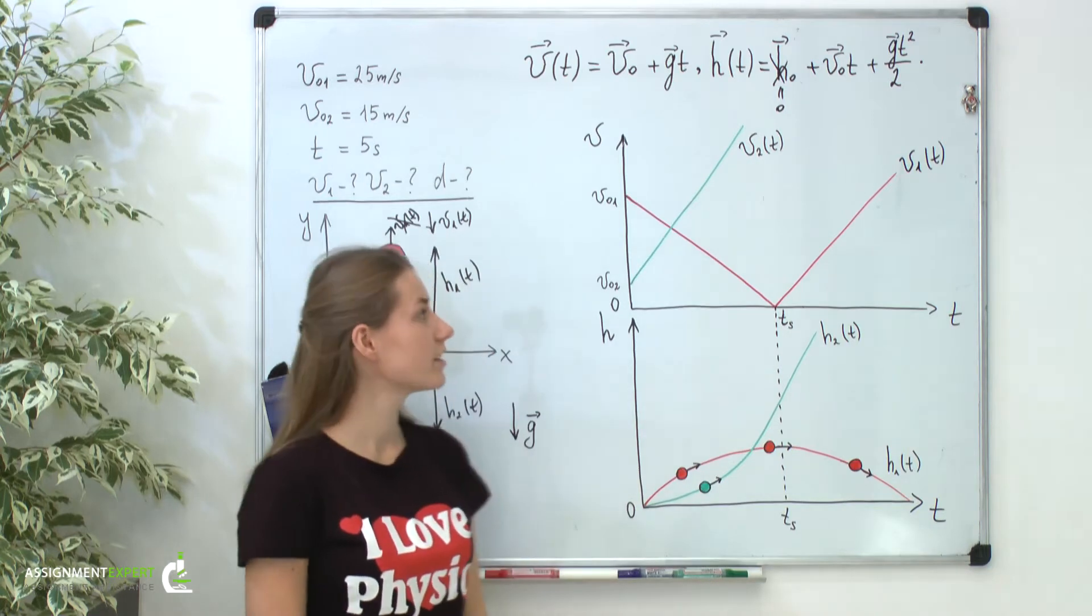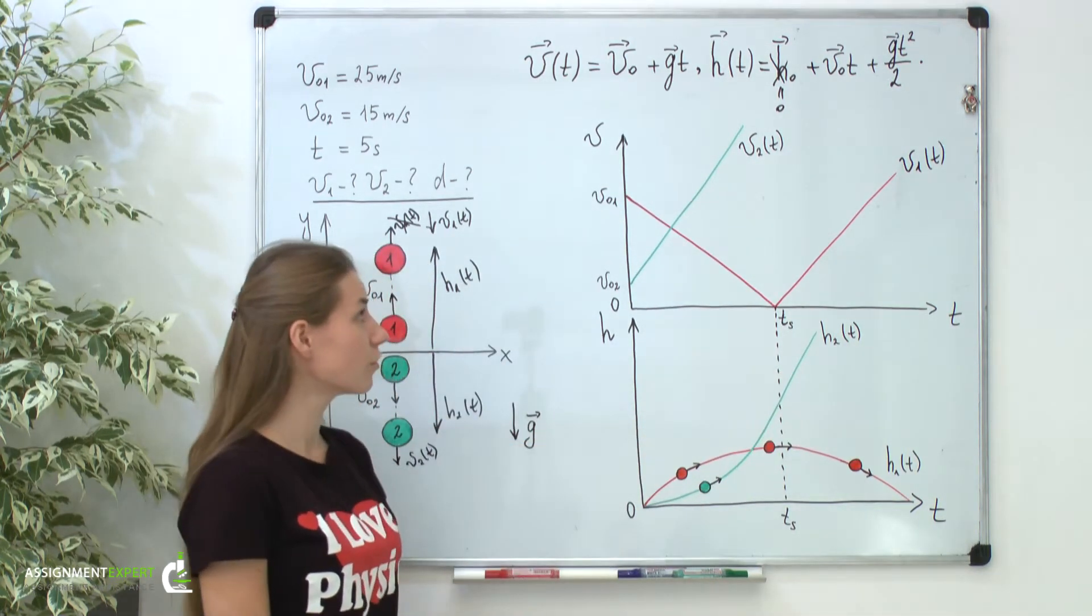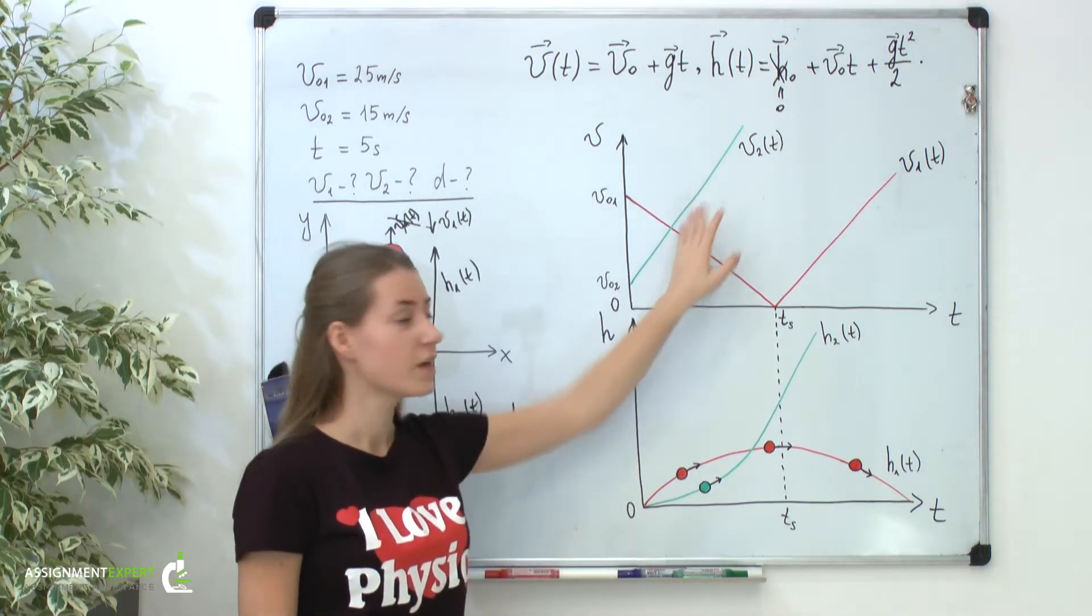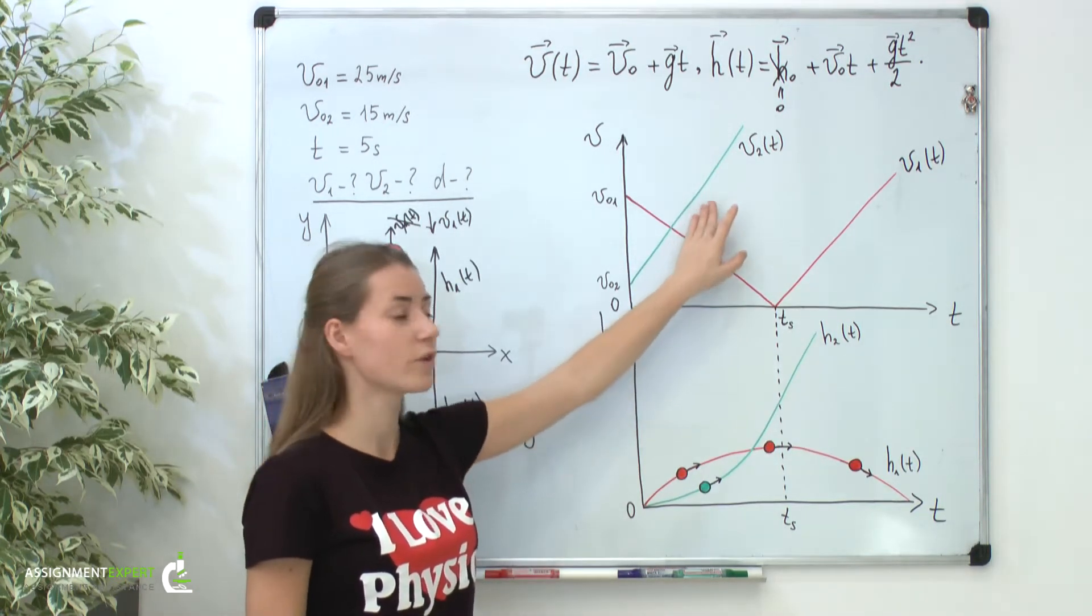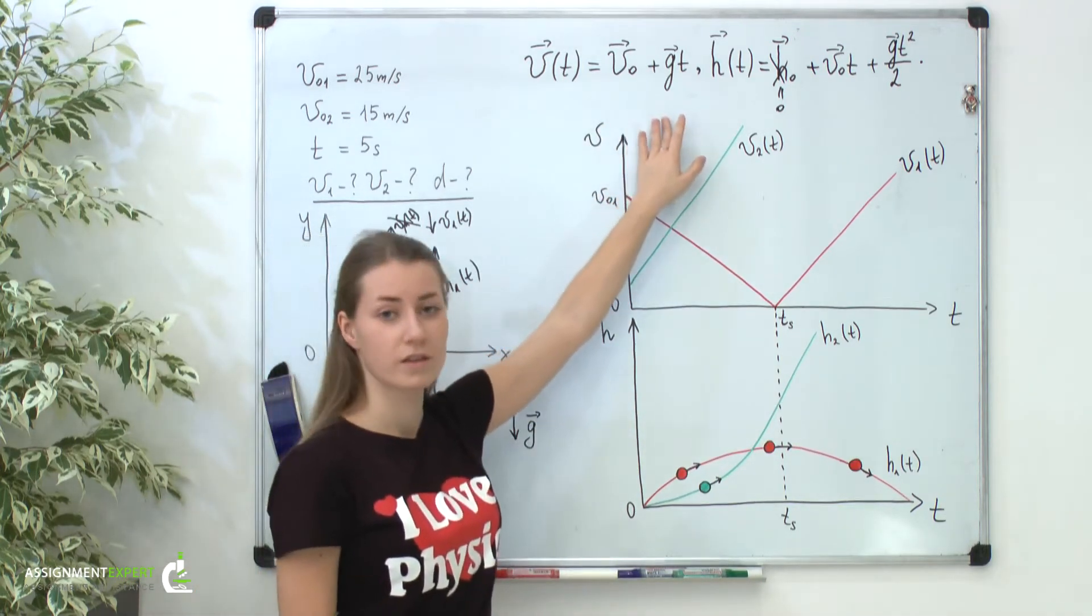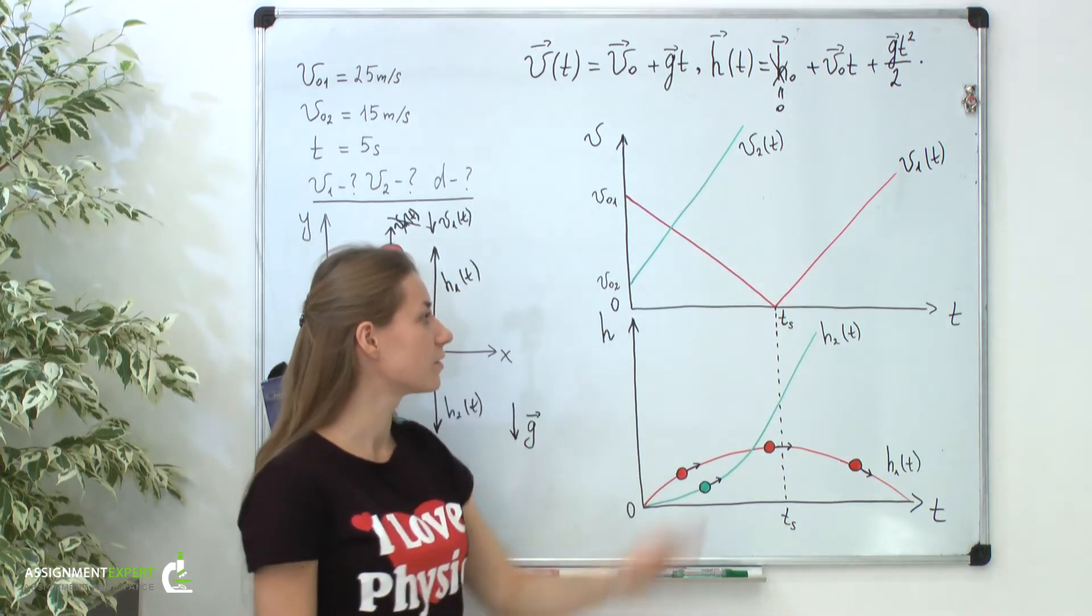Let's first analyze the behavior of velocity in time. From the graph you can see that nothing special happens with our green ball. Its velocity uniformly and rectilinearly increases in time. Of course, this is because our velocity is a linear function of time. So we plot it as a straight line.